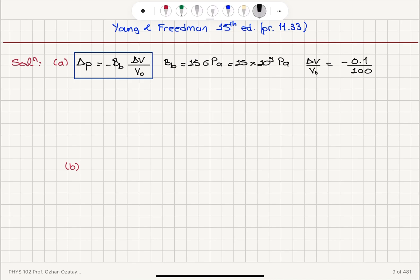So from this relationship, we can see that delta P should be equal to minus 15 times 10 to 9 Pa multiplied with minus 0.001. So this gives us 15 times 10 to 9 times 10 to minus 3, which is 15 times 10 to 6 Pa.